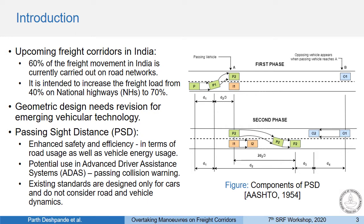However, current standards for PSD are designed only with consideration of cars and thus need to be reworked for freight corridors. One of the first definitions of PSD had four components: D1 is the distance where the vehicle accelerates to overtaking speed, D2 is the overtaking distance itself, D3 is the clearance between passing and oncoming vehicles, and D4 is the distance covered by oncoming vehicles during the overtake.